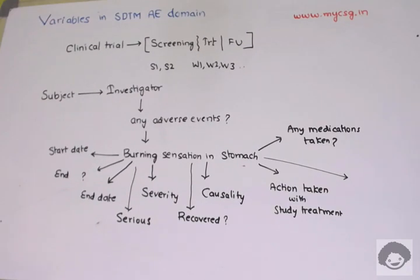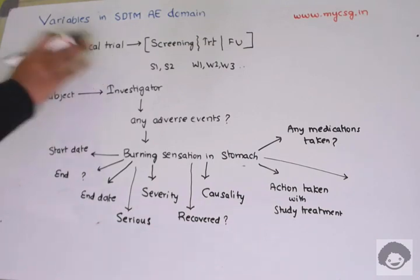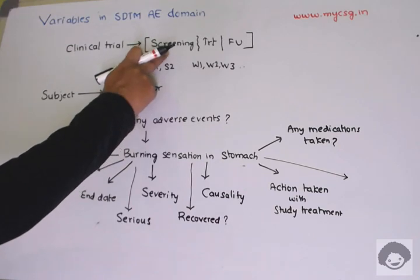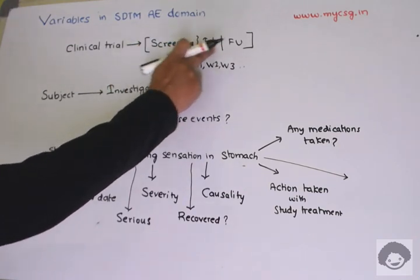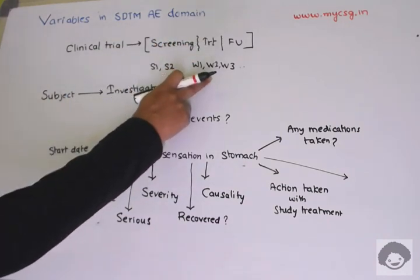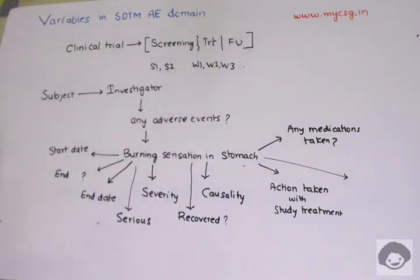Welcome back to this video series on SDTM programming. In this video we will see how to logically relate the variables in the SDTM AE domain. A clinical trial is being conducted with examinations in three phases: screening, treatment, and follow-up. There are two visits in screening, three in treatment, and one in follow-up. At each visit, the investigator asks participants whether they have experienced any adverse events.